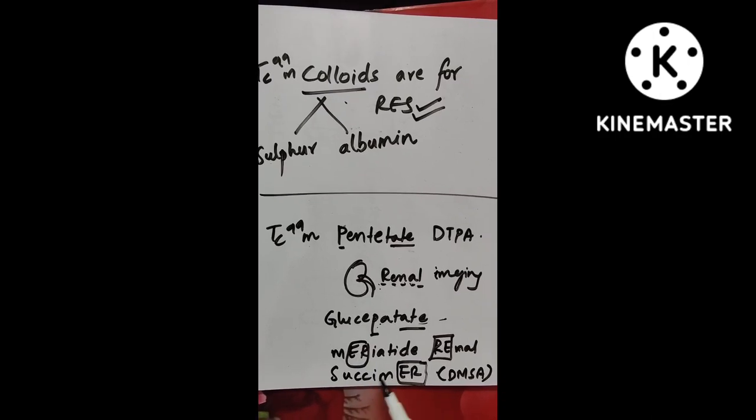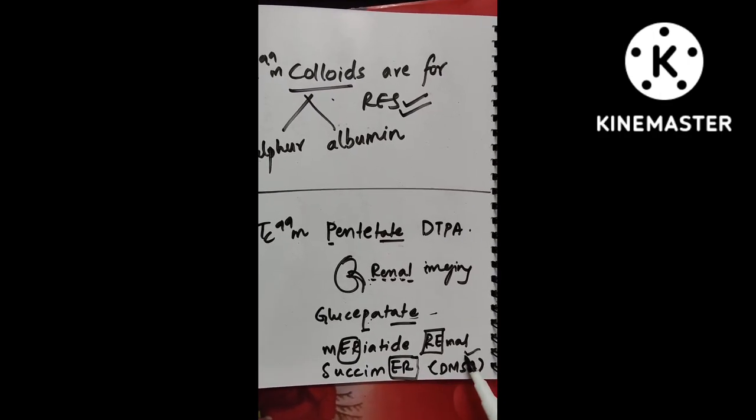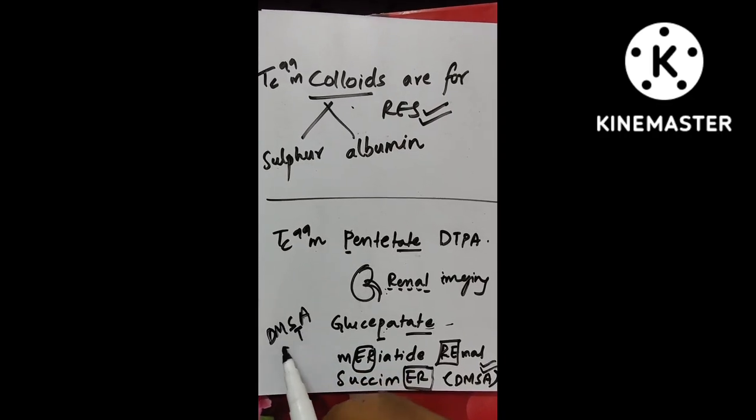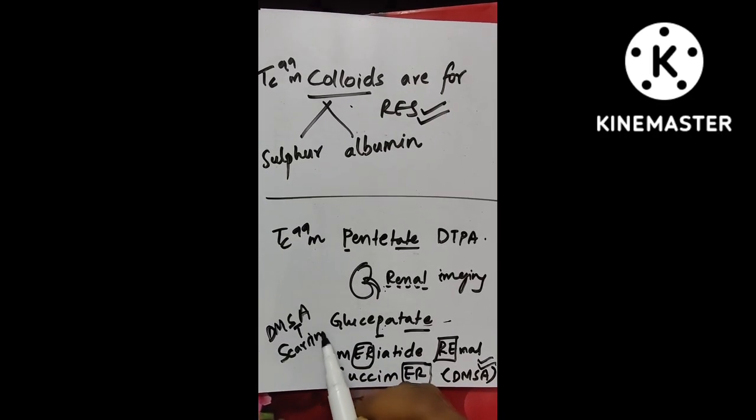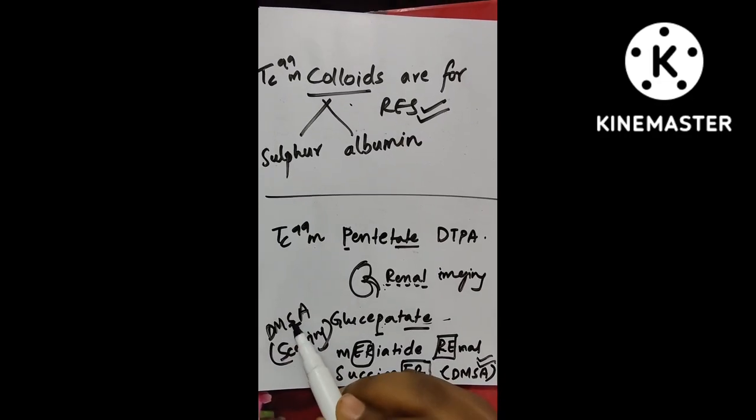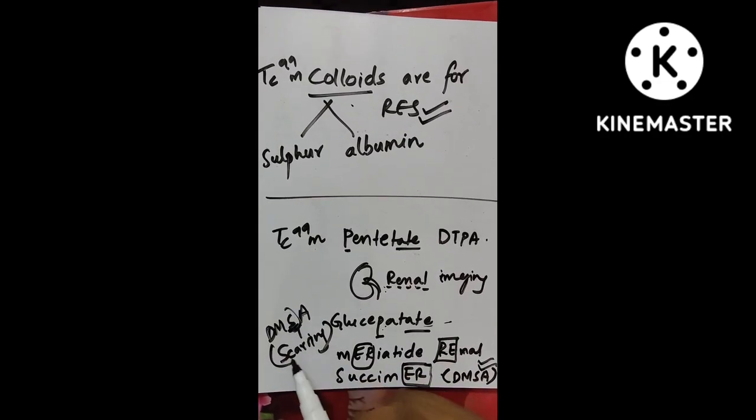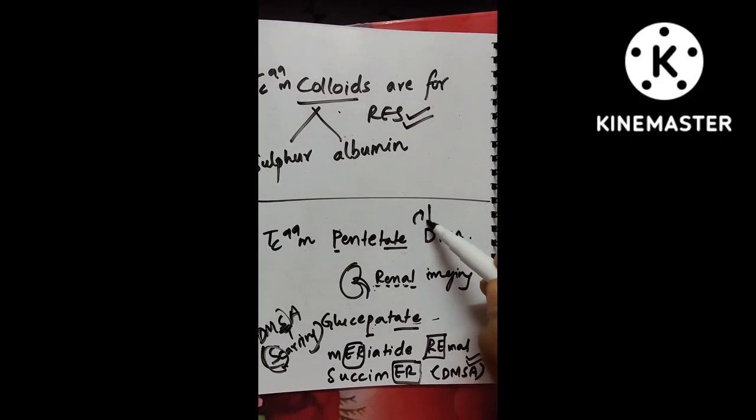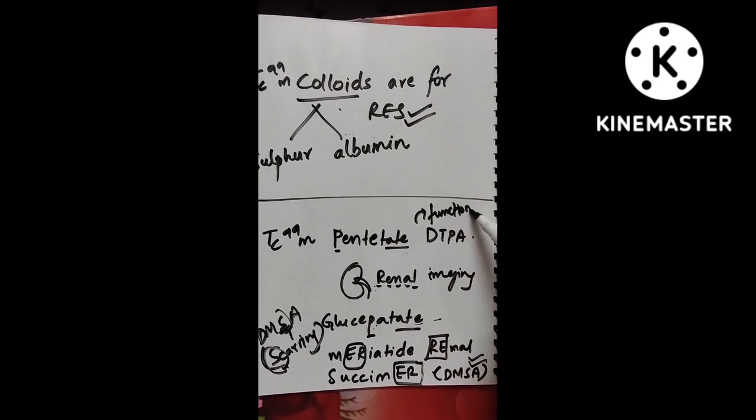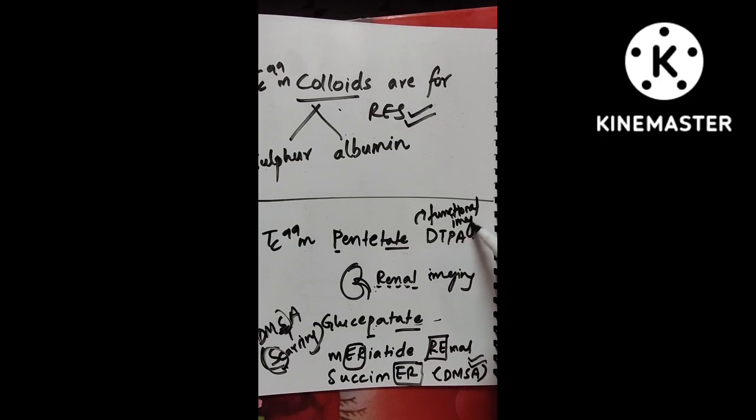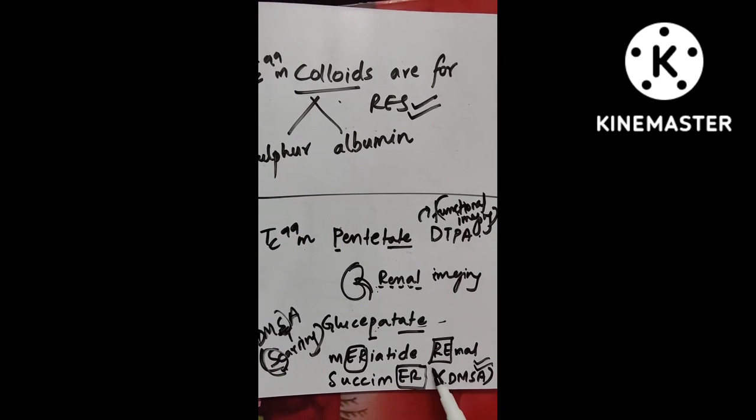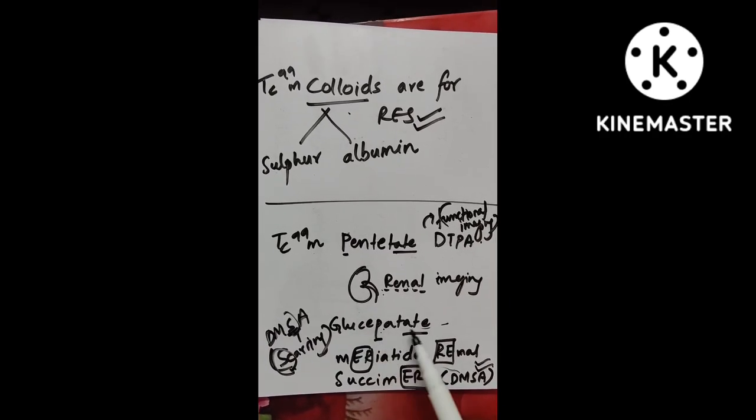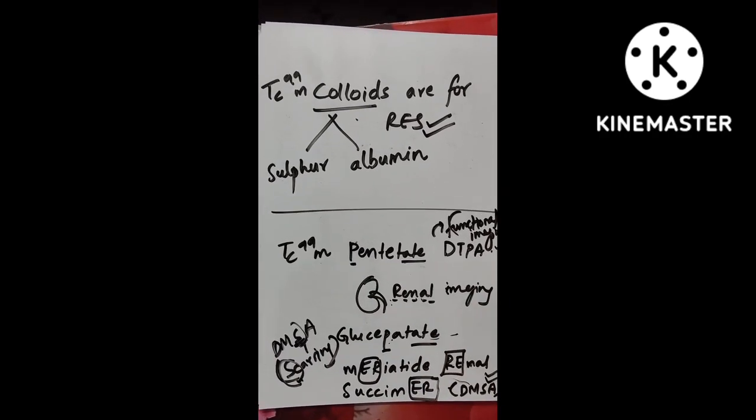Meriatide has RE and Saximer has RE. Saximer is famously called as DMSA, right? We use DMSA scarring. And see, DMSA scan is used mainly for scarring. Remember that point also. I just remembered that one. Yeah. S is for scarring, okay? DMSA scan is for scarring. And DTPA is used for functional imaging, okay? That is also important thing. DTPA is for functional imaging and DMSA is for scarring. Meriatide has RE renal and this also has PTA, PTA, that is renal thing.